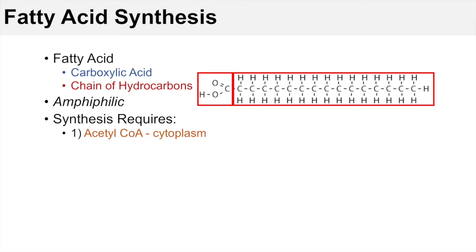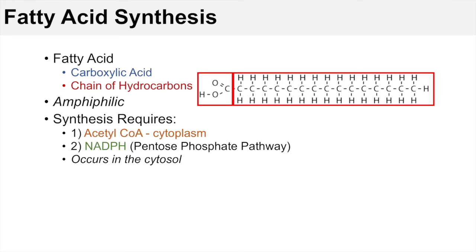Synthesis of fatty acids requires a few different things. One is that it requires high levels of acetyl-CoA in the cytoplasm, and we'll get into why that's important in a bit. It also requires high levels of NADPH, which is normally derived from the pentose phosphate pathway. Fatty acid synthesis occurs in the cytosol, as opposed to beta-oxidation, or fatty acid catabolism, which occurs in the mitochondria.